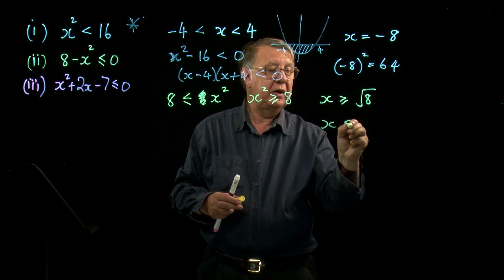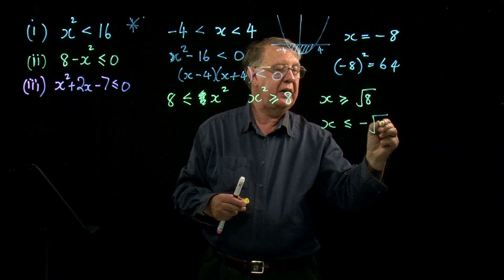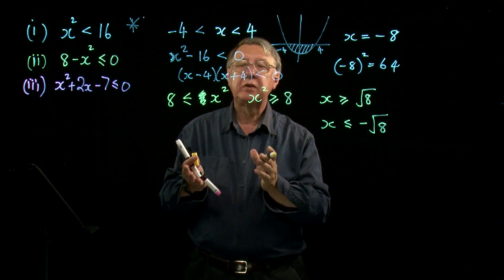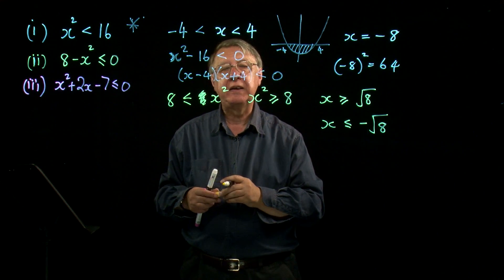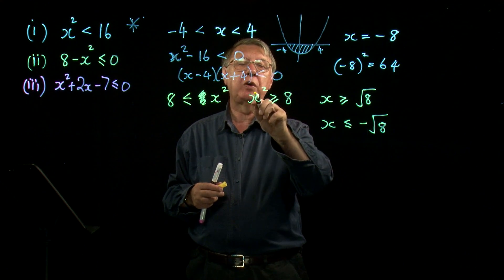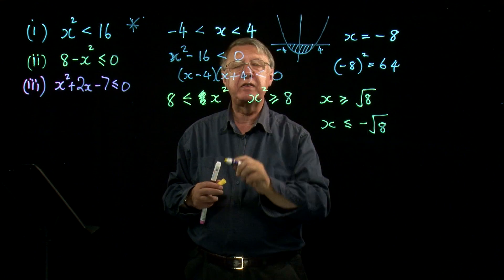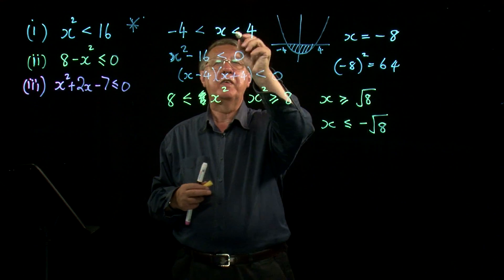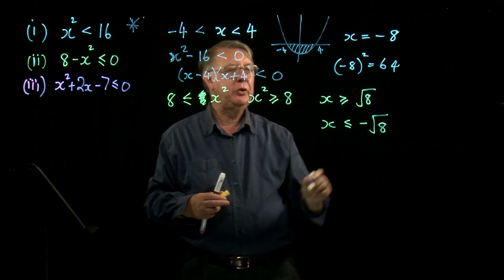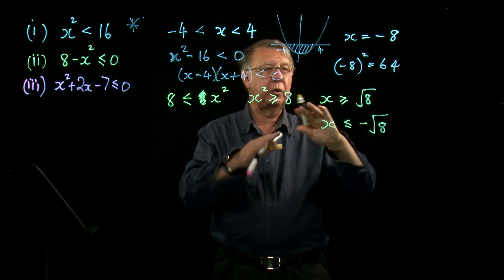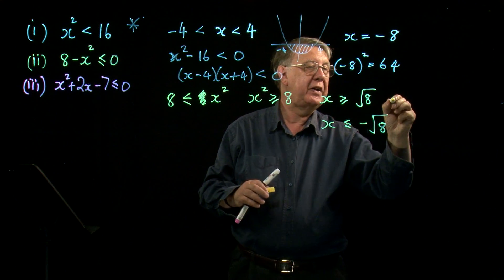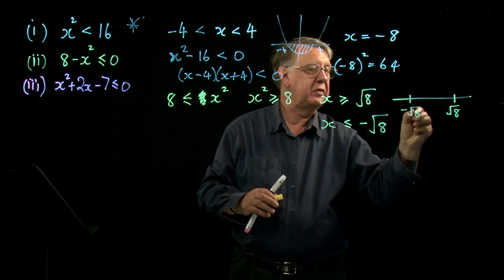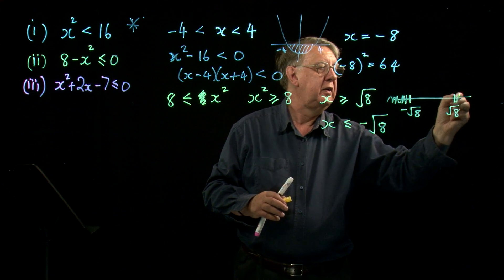But of course, if you think hard enough, if x is more negative than root 8, then if you square it, you get a number that's more than 8. So when your inequality is this way round, when it's a greater than type, and it's still x squared, instead of getting the sandwich inequality, you get the exclusive inequality, okay, the outside. So on our number line, if that was root 8 and that was minus root 8, then we are here and we are here.